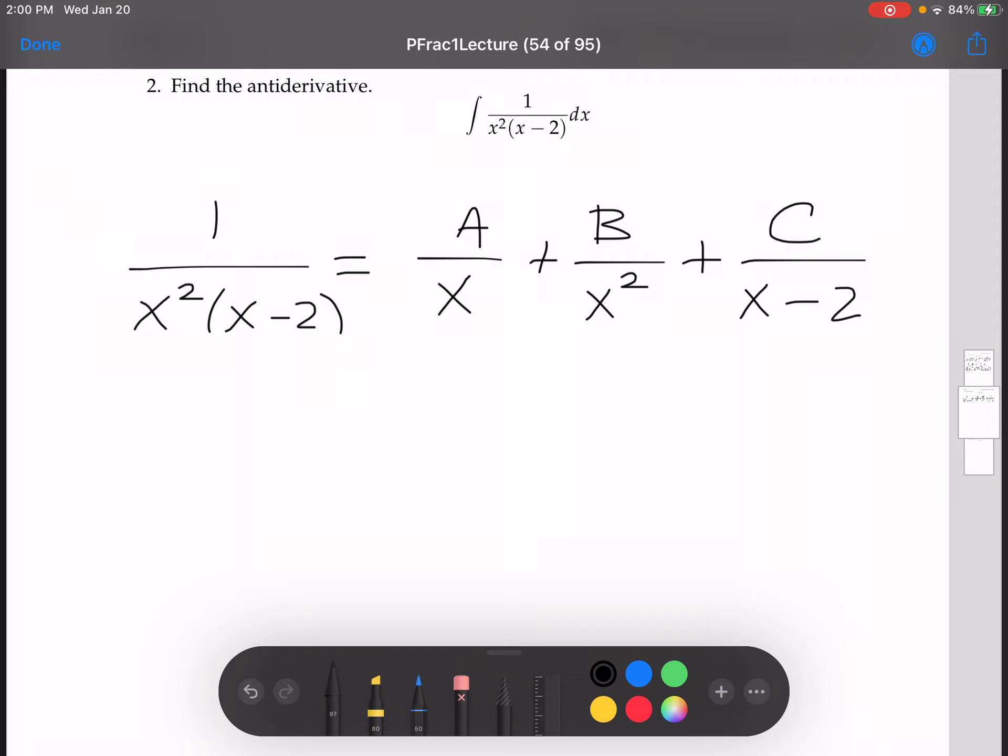And we're left with 1 equals, and multiplying the right-hand side by this denominator. I'll go ahead and do that now. So now we have A over x times x squared x minus 2, plus B over x squared times x squared x minus 2, plus C over x minus 2 times x squared x minus 2.